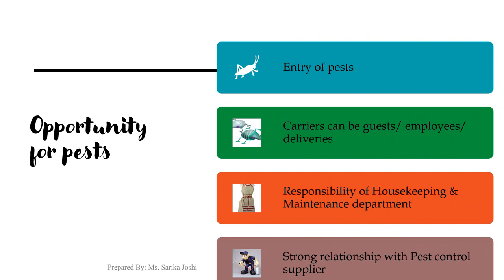Guests and employees can unknowingly introduce pests to your property on their personal belongings. It becomes a responsibility of the housekeeping and maintenance department to keep a close track of the area. Frequent and regular inspections by housekeeping staff can help to identify these issues. You should empower them by providing training on common pests and signs of their presence. It is also important to establish a strong relationship with the pest control provider who can inspect the area thoroughly and help control pests.